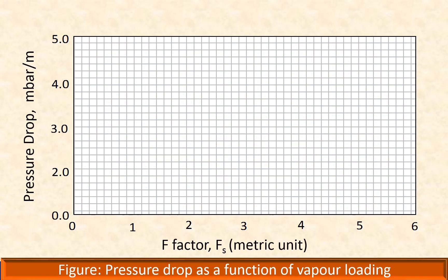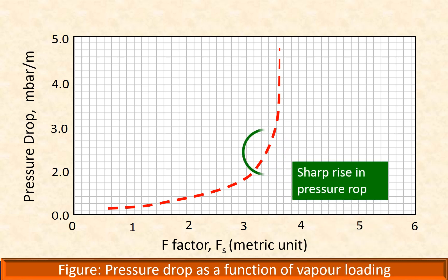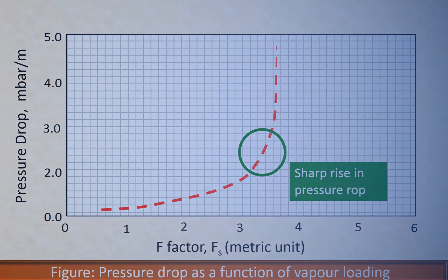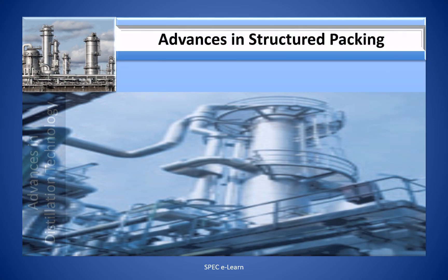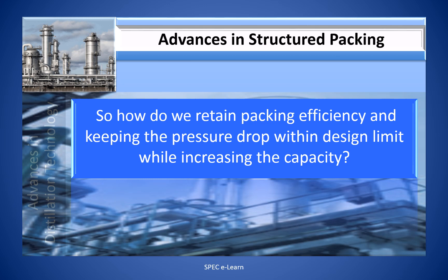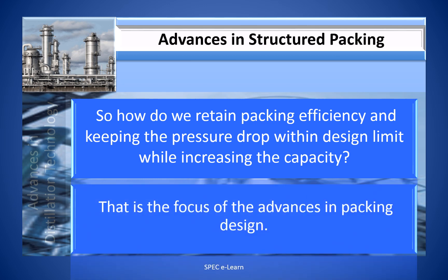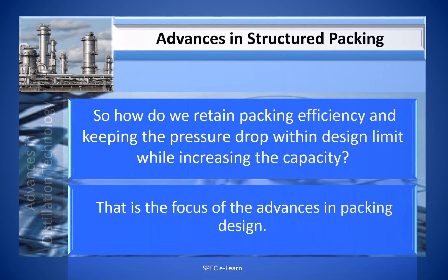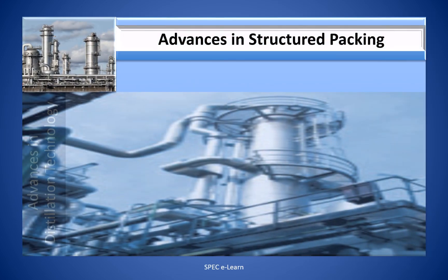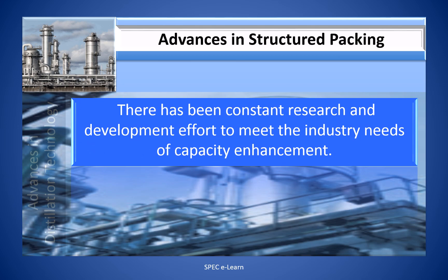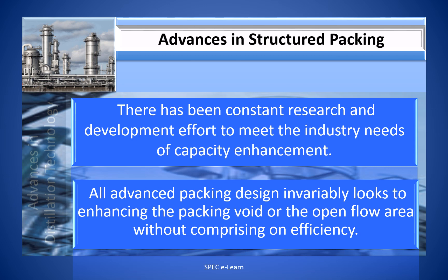This figure illustrates pressure drop as a function of vapor loading. As vapor loading increases, pressure drop increases gradually up to a certain point. As capacity is increased progressively beyond this point, pressure drop starts increasing sharply. The point where the sharp increase in pressure drop is observed indicates the onset of flooding. The focus of advances in packing design is to retain packing efficiency and keep pressure drop within design limits while increasing capacity.